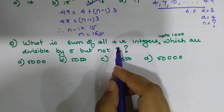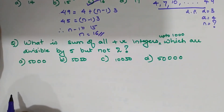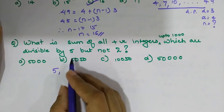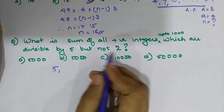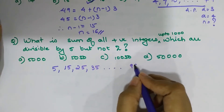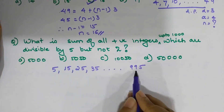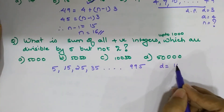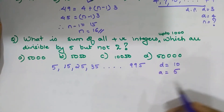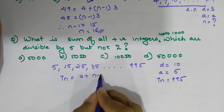Question 3: What is the sum of all positive integers up to 1000 which are divisible by 5 but not by 2? Numbers divisible by 5 but not 2 are: 5, 15, 25, 35 ... up to 995. We can't take 10, 20, etc. because they are divisible by 2, and we can't take 1000 either. This is an AP with first term 5, last term 995, and common difference 10.